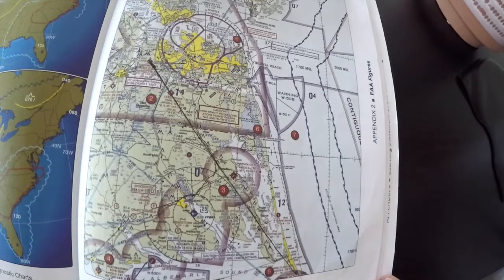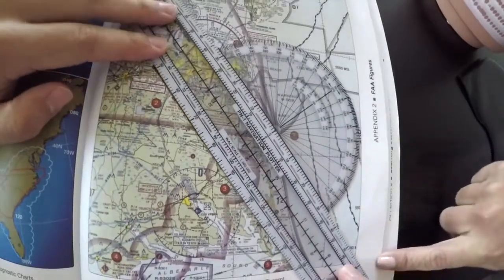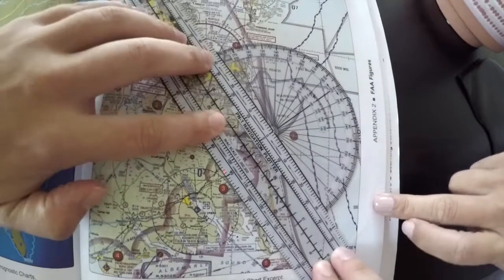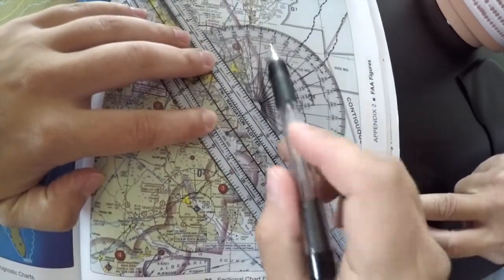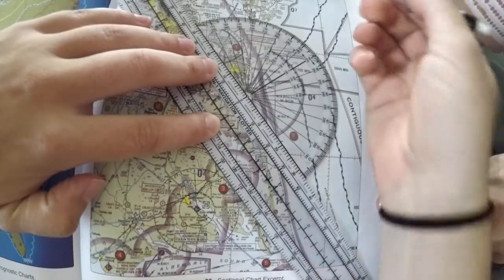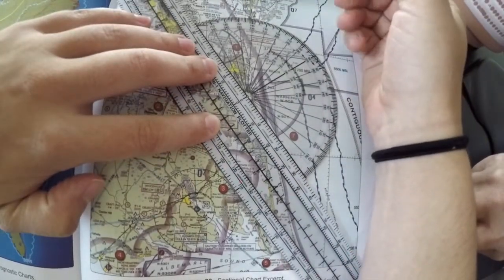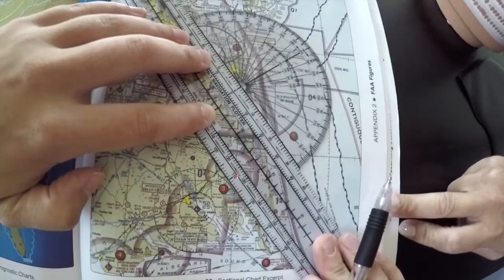So the right way is to align your plotter with that line that you just drew and slide it up until one of these lines here is parallel to the vertical grid line on your map. You can't really see it, but there's one right here. So I'm going to slide it up.